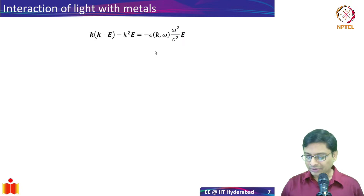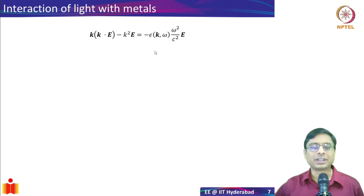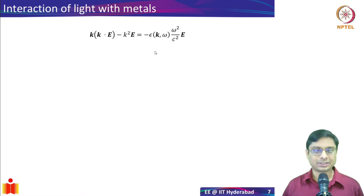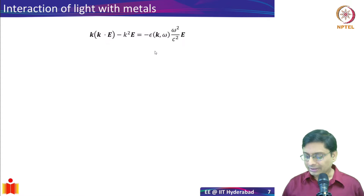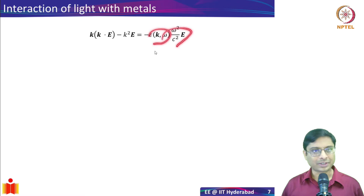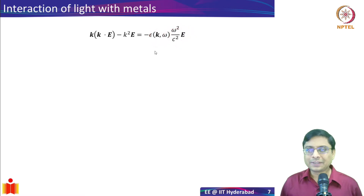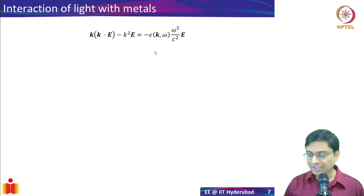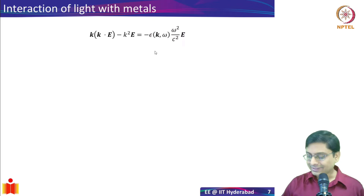Essentially this is a vector equation. You have the k vector — the wave can be in any direction, it is not confined to any of the three coordinates. The electric field is also three-dimensional. Then you have the permittivity and omega squared. If you notice, this is a bit of an advanced thing I have put in here for the sake of accuracy — the epsilon has a k dependence.